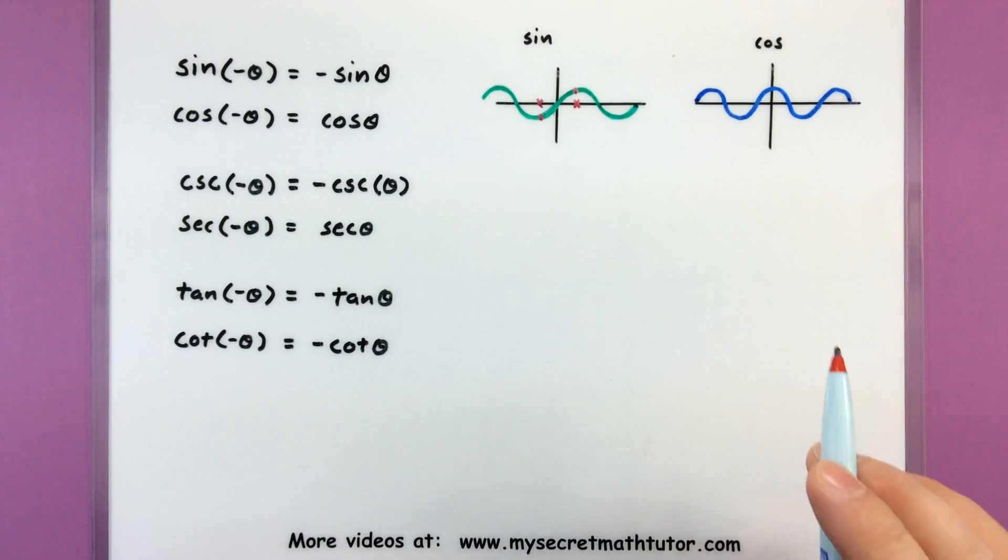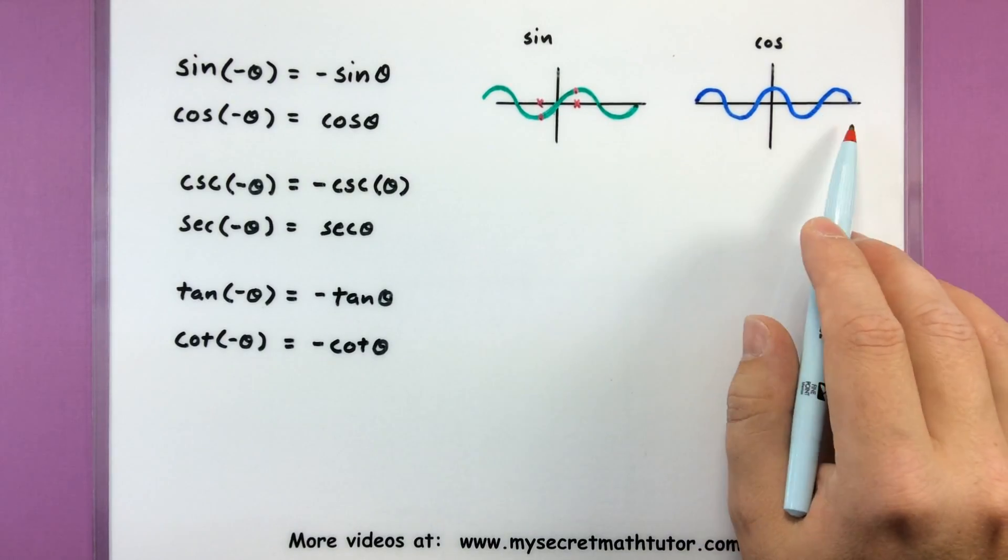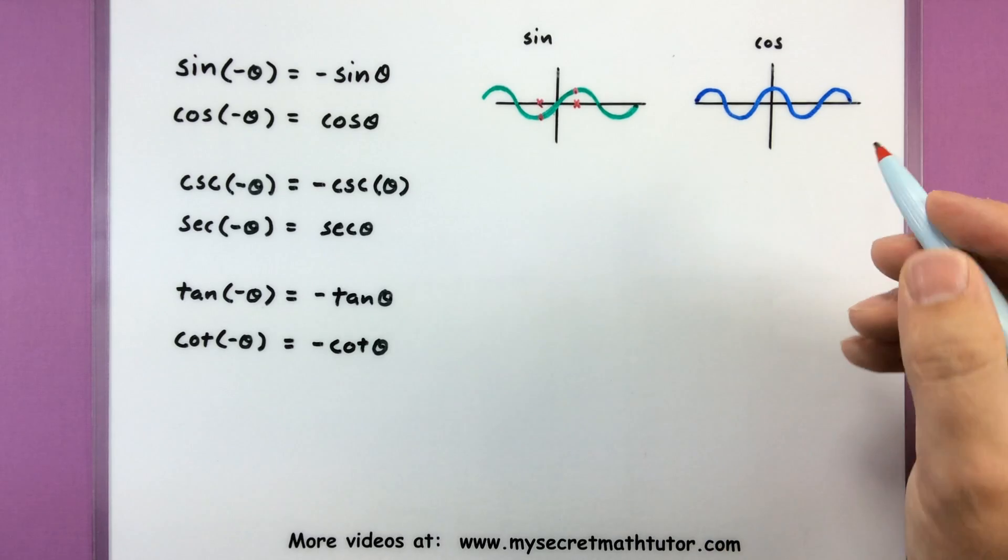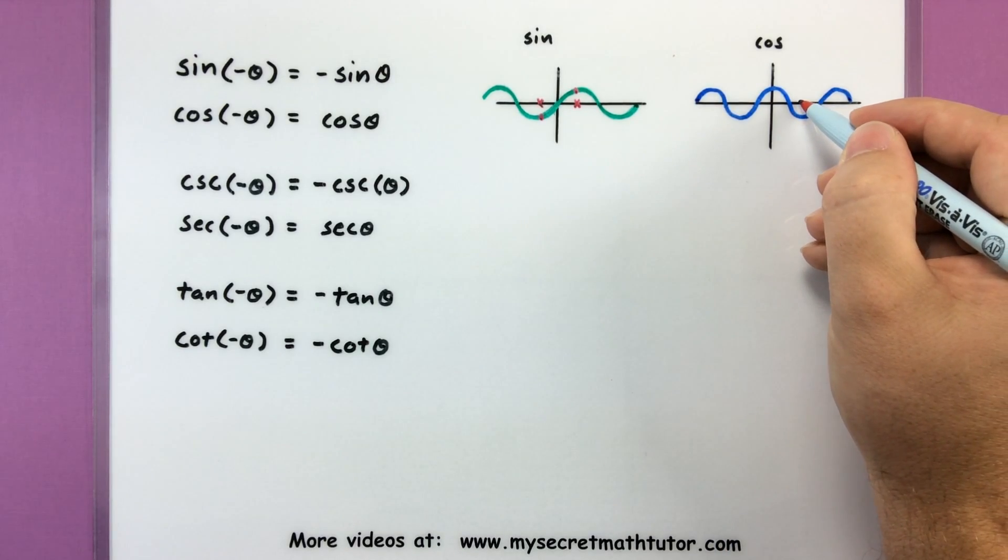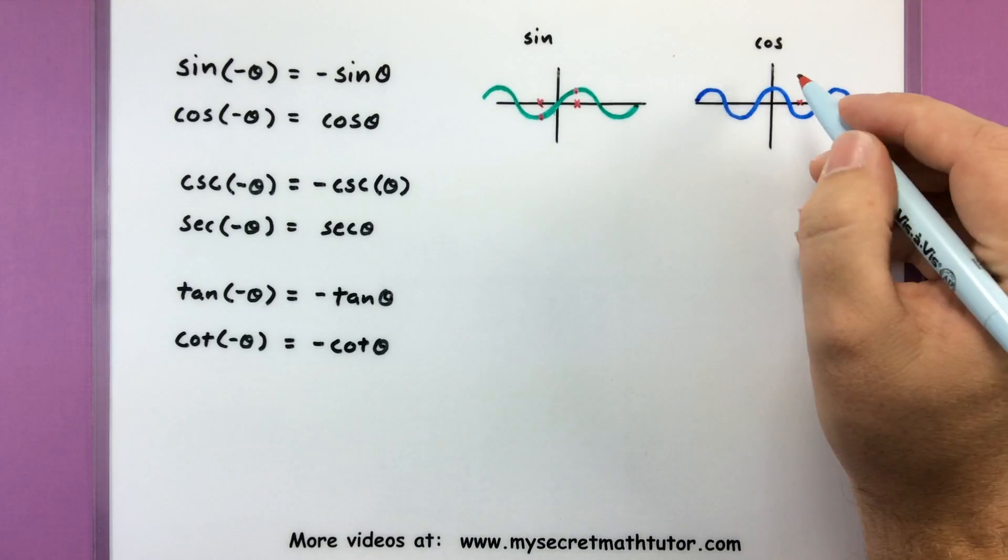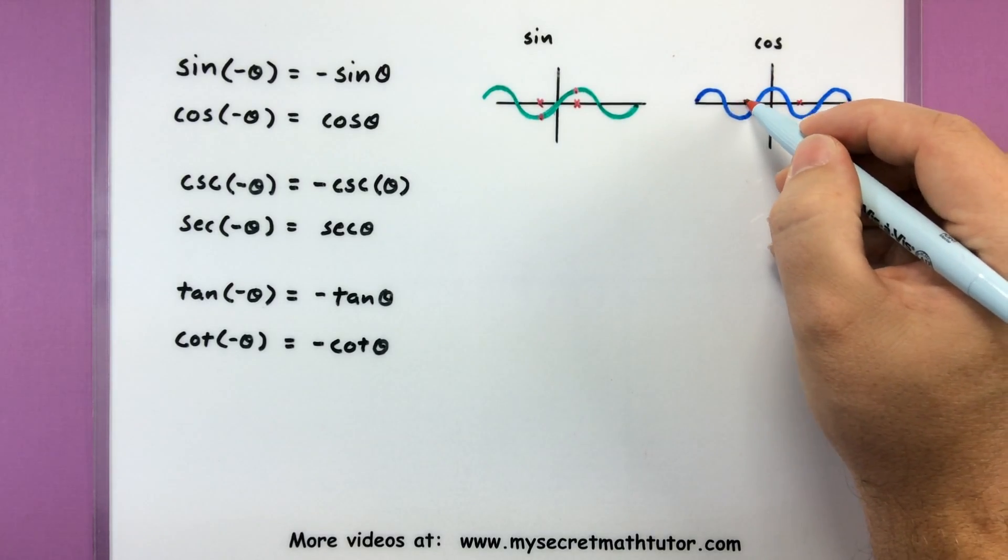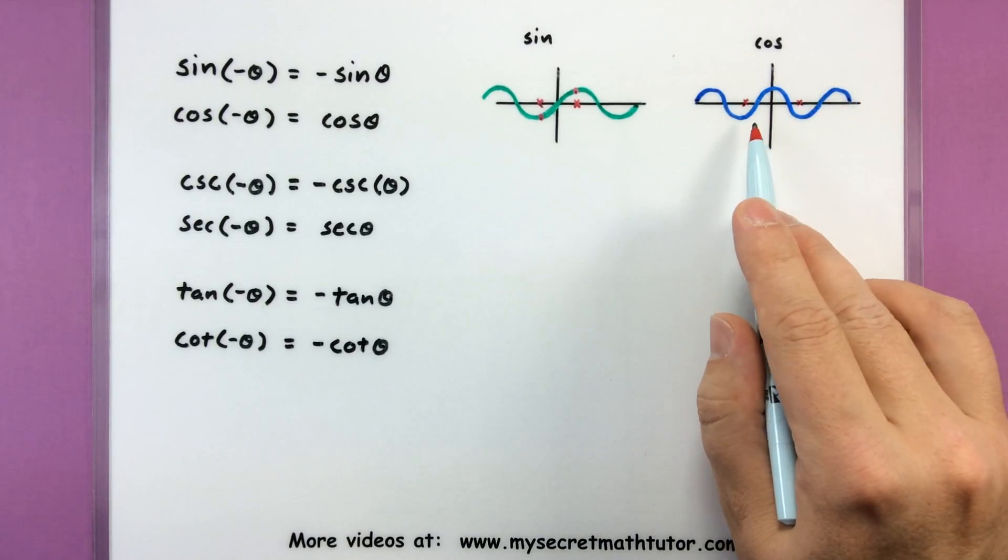Now, moving on to cosine, cosine is an even function. So our symmetry is right over that y axis. All right, so let's do the same. Let's look at some sort of point out here, maybe theta, and look at that same point, negative theta, on the other side. So theta and negative theta.